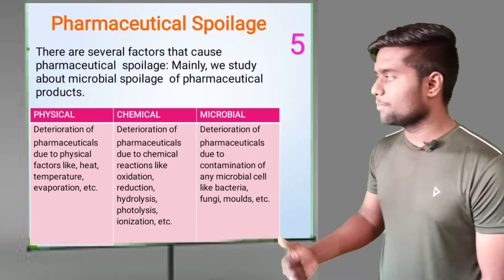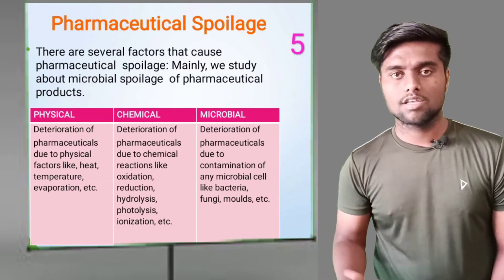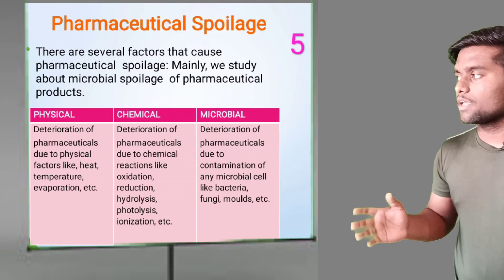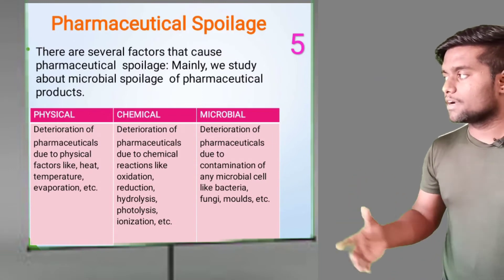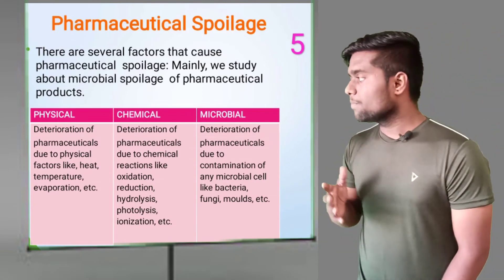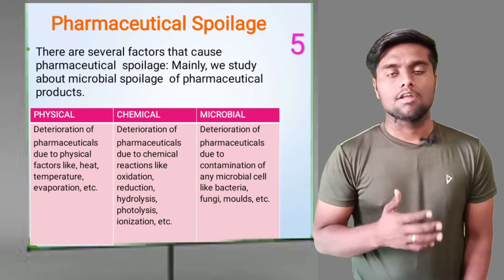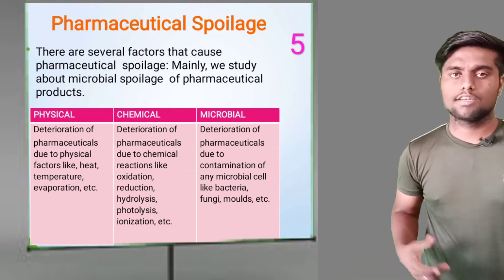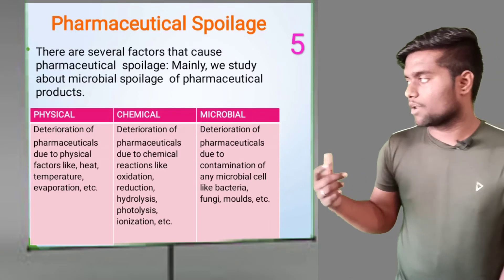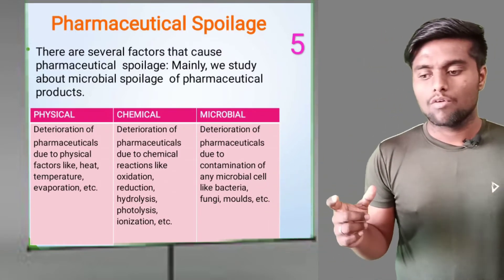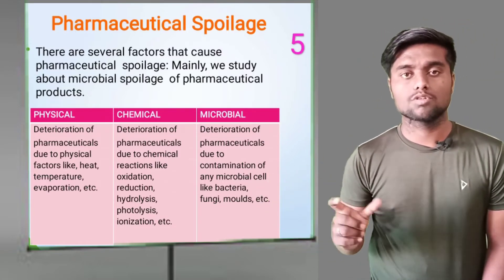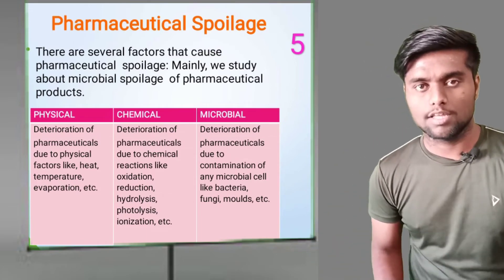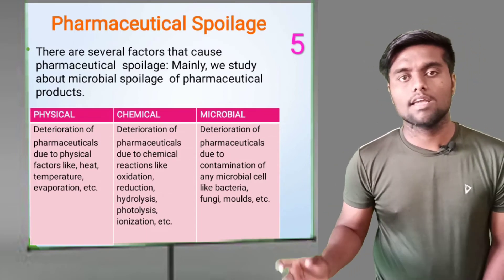After that, we see how spoilage occurs from chemical factors. Deterioration of pharmaceuticals due to chemical reactions like oxidation, reduction, hydrolysis, photolysis, and ionization causes spoilage. These reactions — oxidation, reduction, hydrolysis — are responsible for spoilage through various types of chemical reactions.